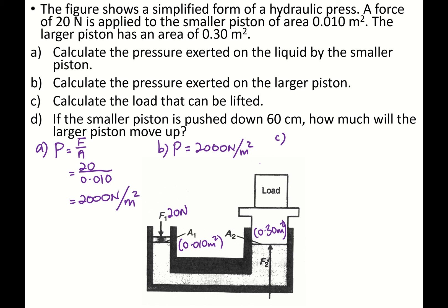Calculate the load that can be lifted. If I already know the pressure at the larger piston is 2,000, so it's P equals F over A. So that's 2,000 equals F over 0.3. F equals 600 N. So I want you to take a conscious effort to look at this. My force is only 20 N and it lifts a load of 600 N. So isn't this a force magnifier?